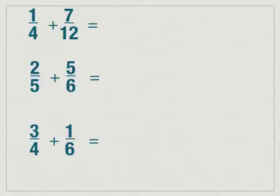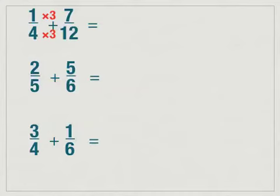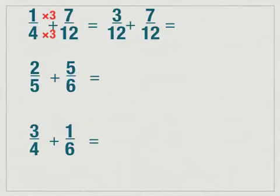So to change one-fourth to have a denominator of twelve, I need to multiply both the denominator and the numerator by three. I do not have to change seven-twelfths in this case, because I'm going to change one-fourth to have a denominator of twelve, so I don't need to change the denominator of seven-twelfths. One times three is three, and four times three is twelve. So one-fourth becomes three-twelfths plus seven-twelfths. When you add fractions, remember you only add the numerators; your denominator stays the same. So the denominator stays twelve, and three plus seven is ten. So I have ten-twelfths.